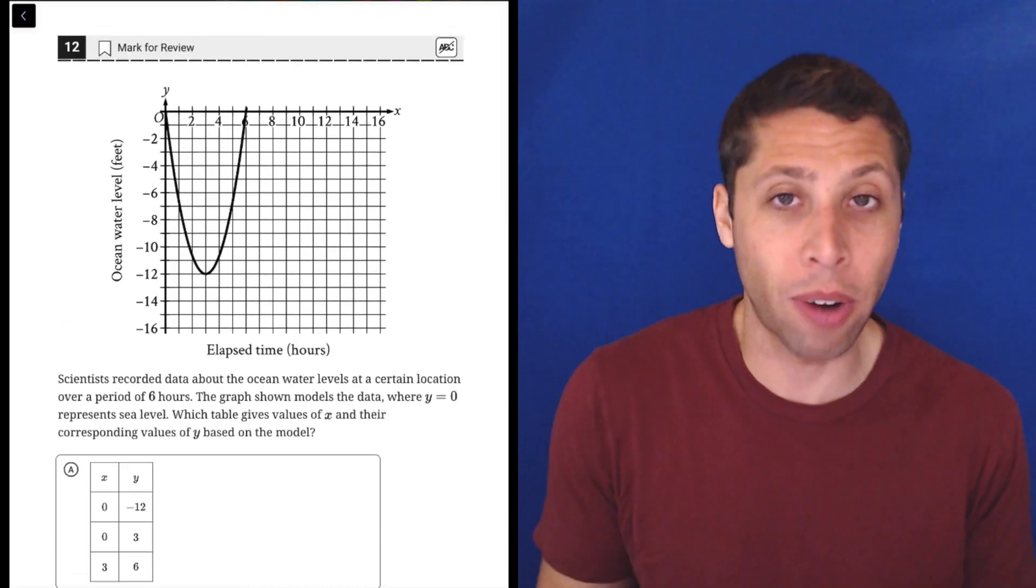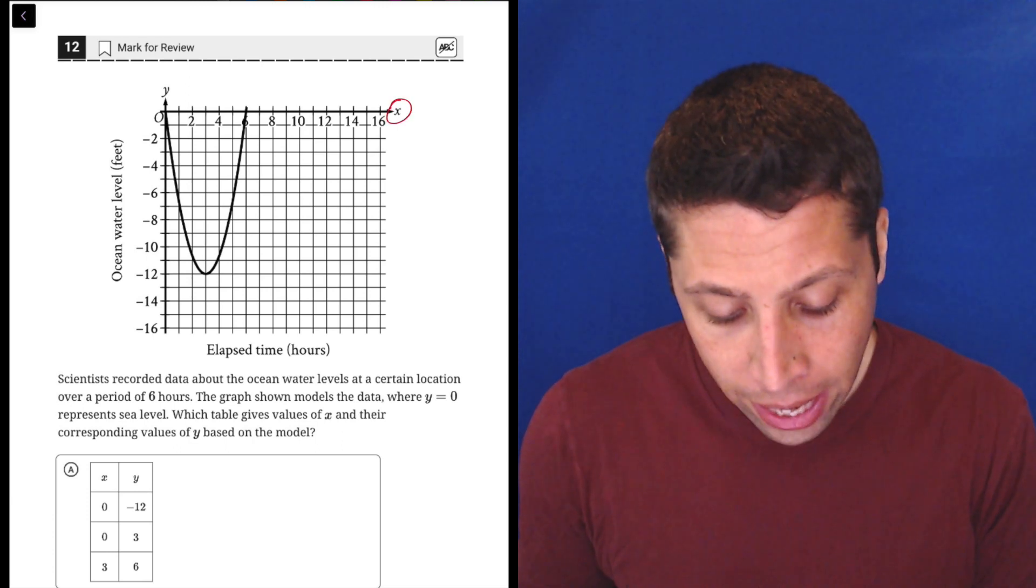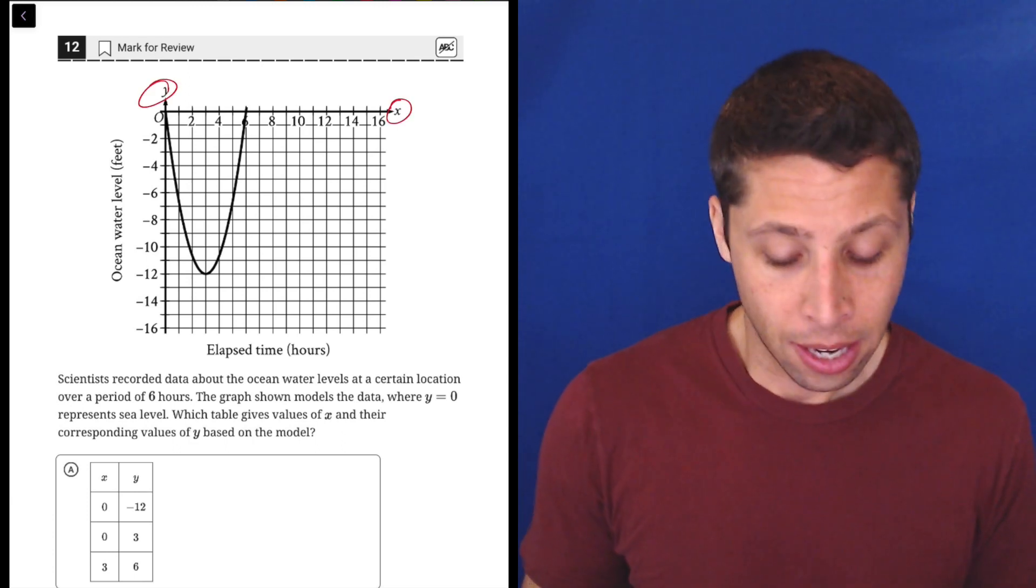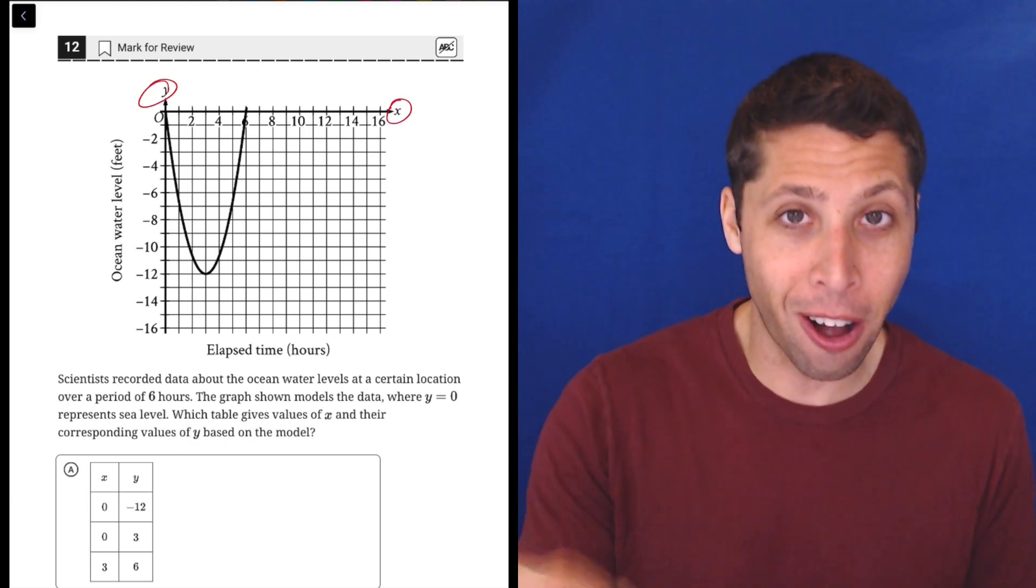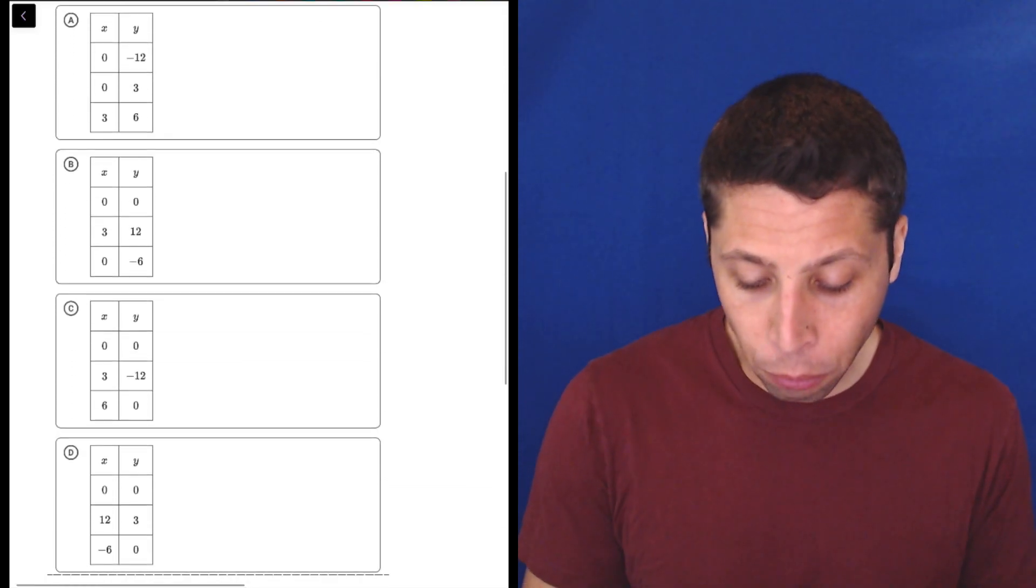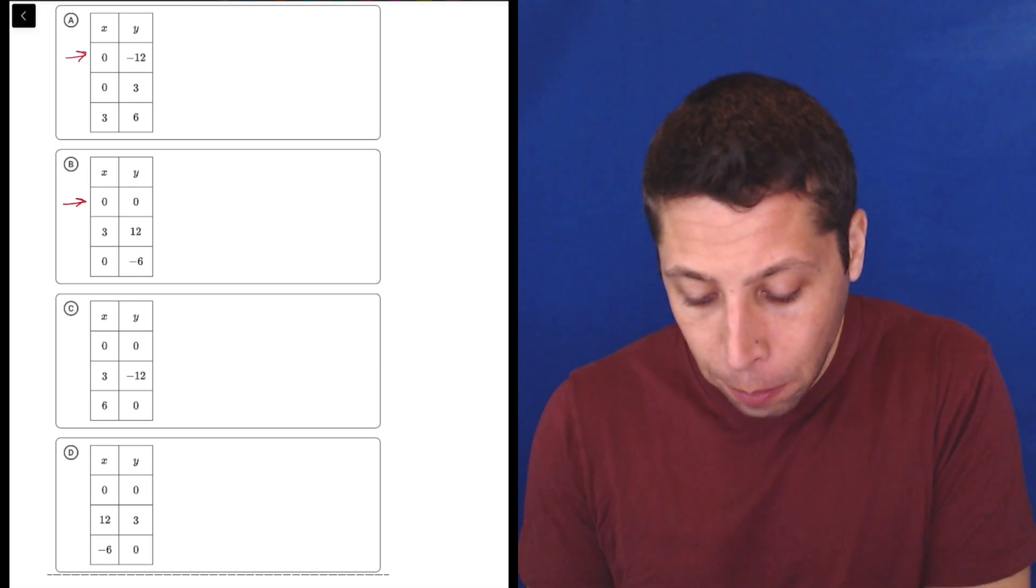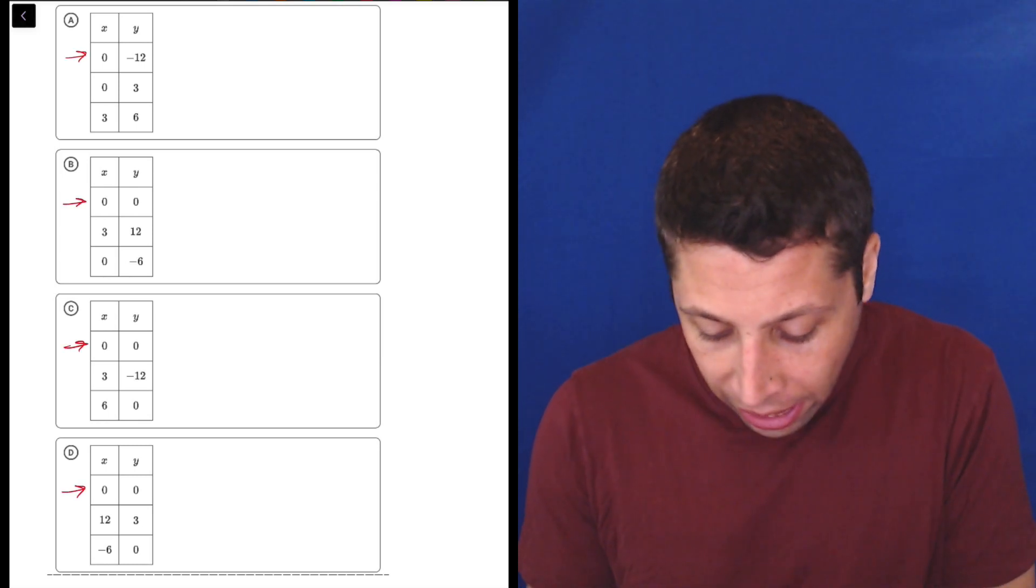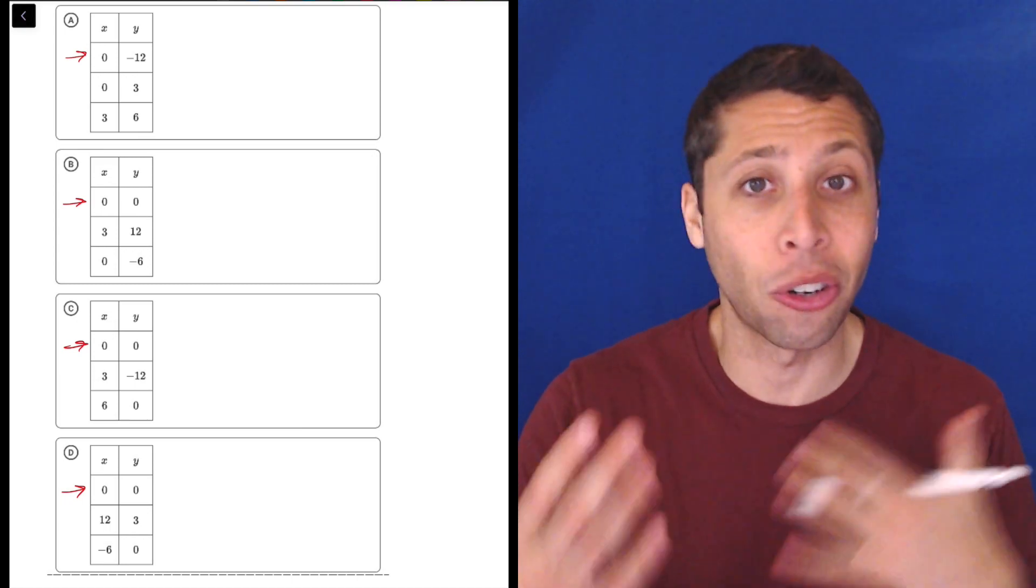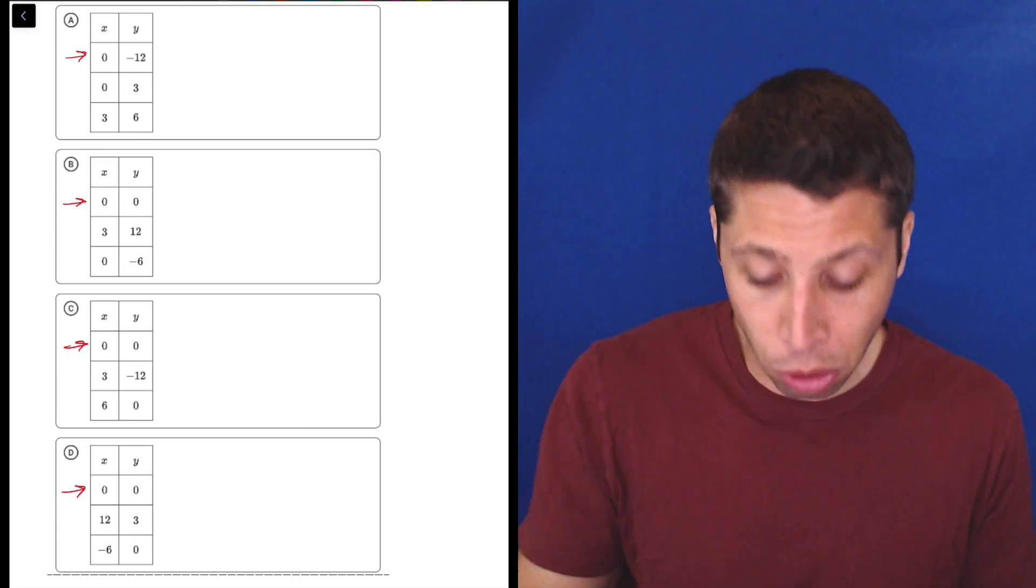This is just them telling us what this graph means, but all I really care about is the fact that just like any graph, it has an X and a Y axis. So I'm looking to match the points on the graph to the points in the chart. I can see that all four of these answer choices start with a Y intercept where X is equal to zero. So that's an important point, whether they gave it to us or not, it's just an easy place to start thinking about things. It's usually an easy point to spot on the graph.